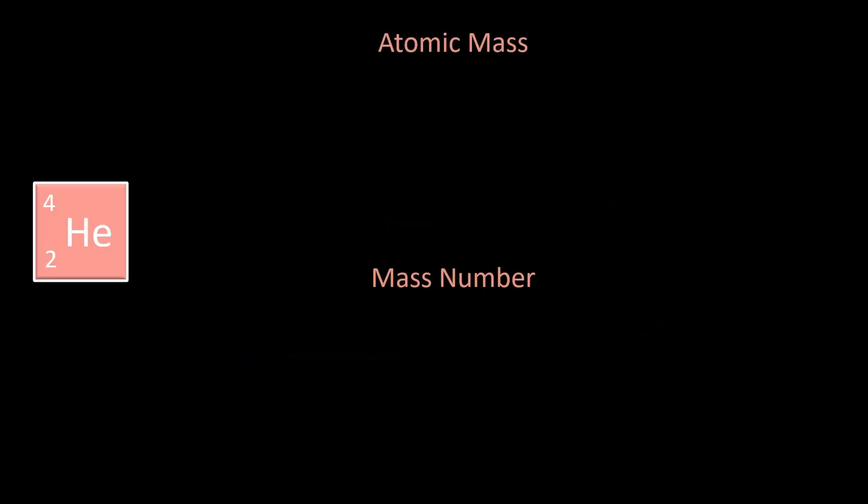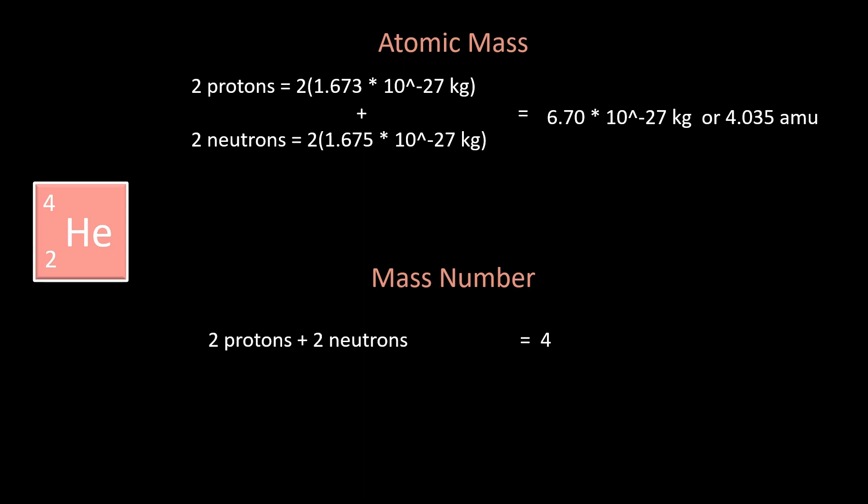For example, helium has two protons, two neutrons, and two electrons. So, we can say it has a mass of approximately 6.70 times 10 to the negative 27 kilograms, or 4.035 AMU. Whereas, the mass number is 4, because once again, there are two protons and two neutrons added together equals 4.